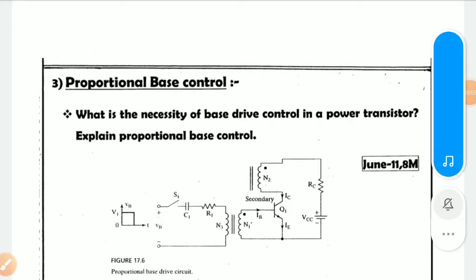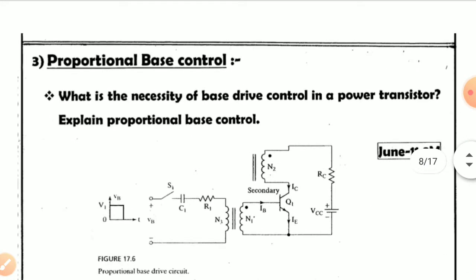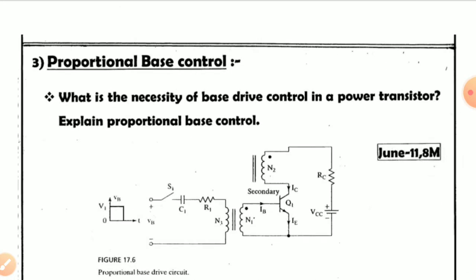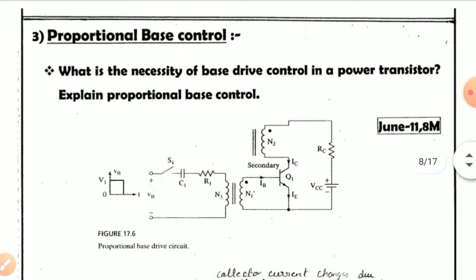Good morning students. In the previous videos we discussed two types of control methods: turn-on control and turn-off control. The third type is proportional base control. You may get exam questions like: what is the necessity of base drive control in a power transistor, and explain the base drive control methods — on control, off control, or proportional base control.